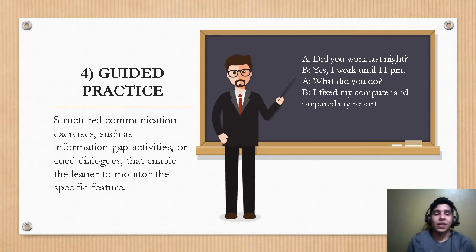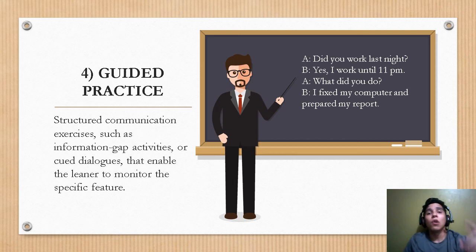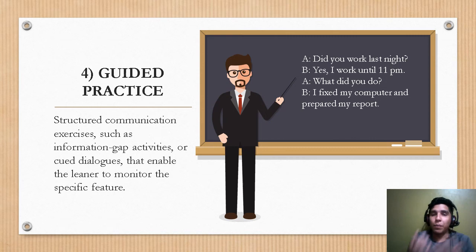First station, guided practice. This is the structured communication exercises such as information gap activities or cued dialogues that enable the learner to monitor the specific feature. In guided practice, the learner now begins to focus on other things like meaning, grammar, and communication as well as pronunciation. Teachers need to develop a continuum of reading activities which shift attention gradually to a new cognitive task while the learners attempt to maintain control of the pronunciation target. So, what do we do in this stage? Put grammar, meaning, or other skills as a complement for the pronunciation. So, the student can put in practice this, as in this example that we have right here.